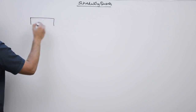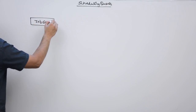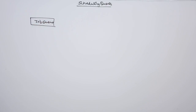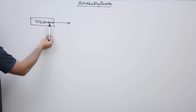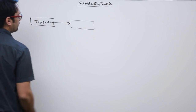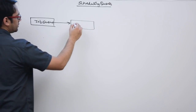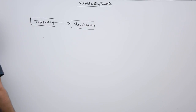The first scheduling queue is called the job queue. This job queue maintains all the processes which need to be executed. These processes are in secondary memory. From the job queue we take these processes and move them to the ready queue.